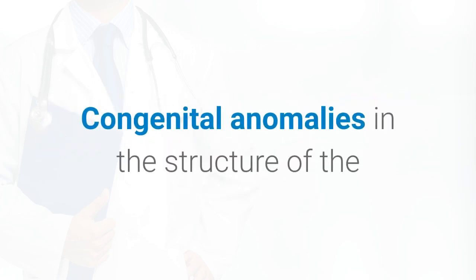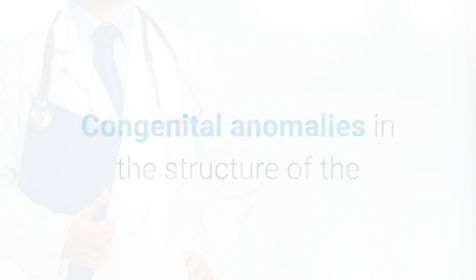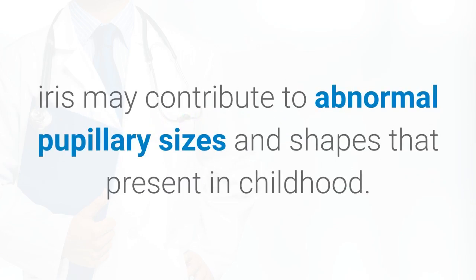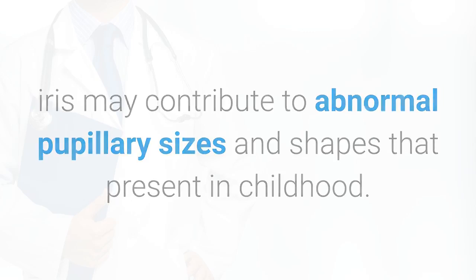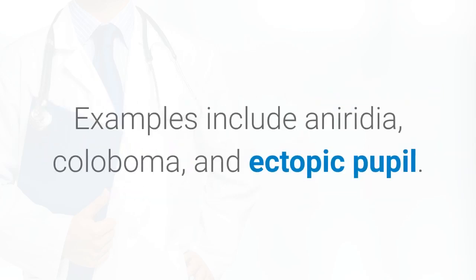Congenital anomalies in the structure of the iris may contribute to abnormal pupillary sizes and shapes that present in childhood. Examples include aniridia, coloboma, and ectopic pupil.